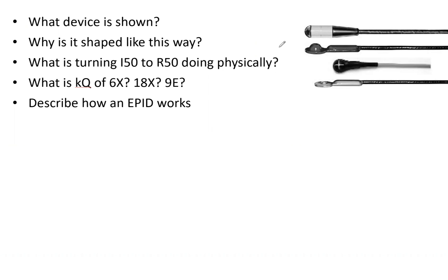So you very well may get a question, you see a picture like this, and they say, okay, what are these? Why is it shaped like this? What is turning I-50 to R-50 doing physically? And then what is the KQ for 6X, 18X, 9E? And then describe how an EPID works.